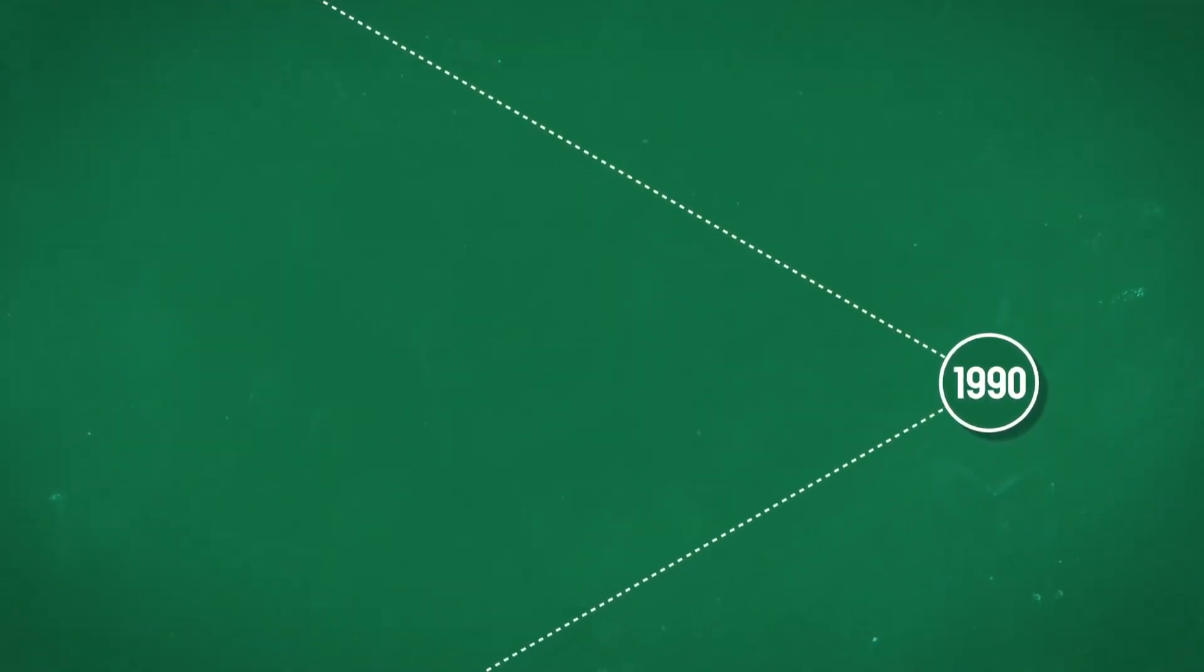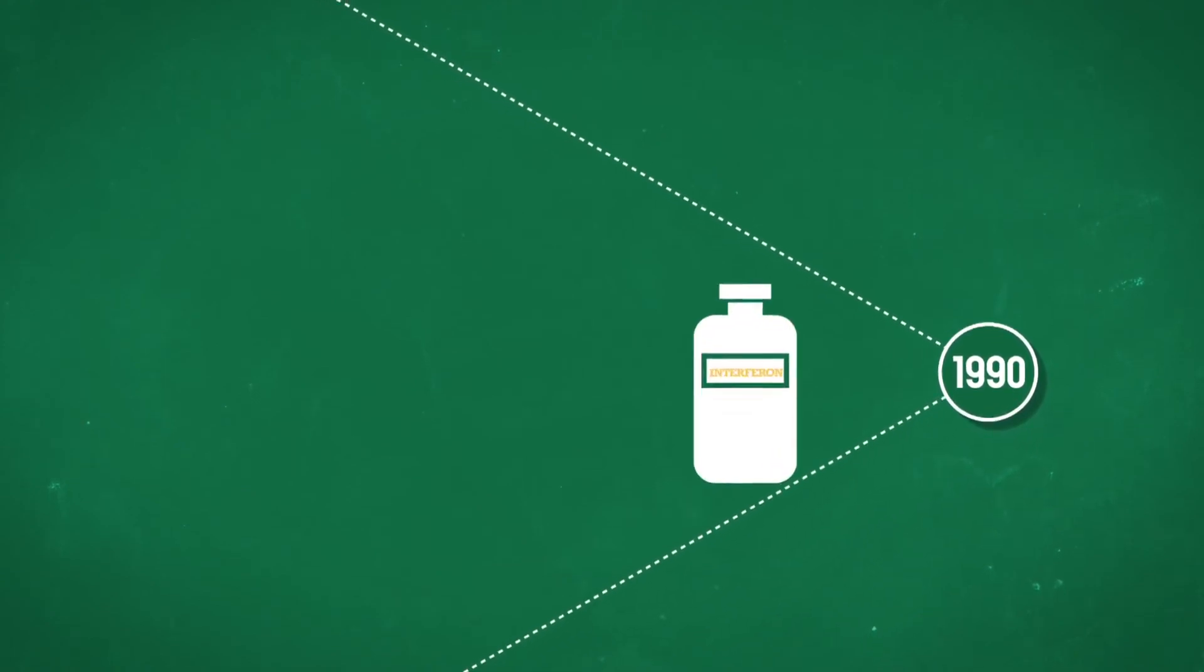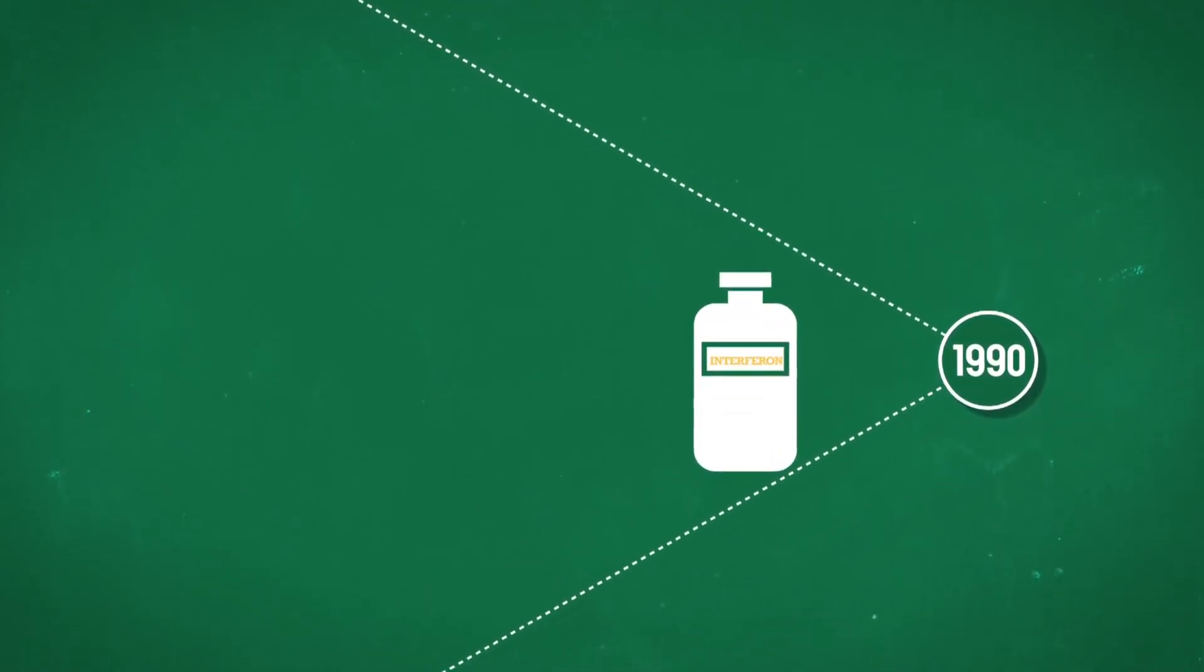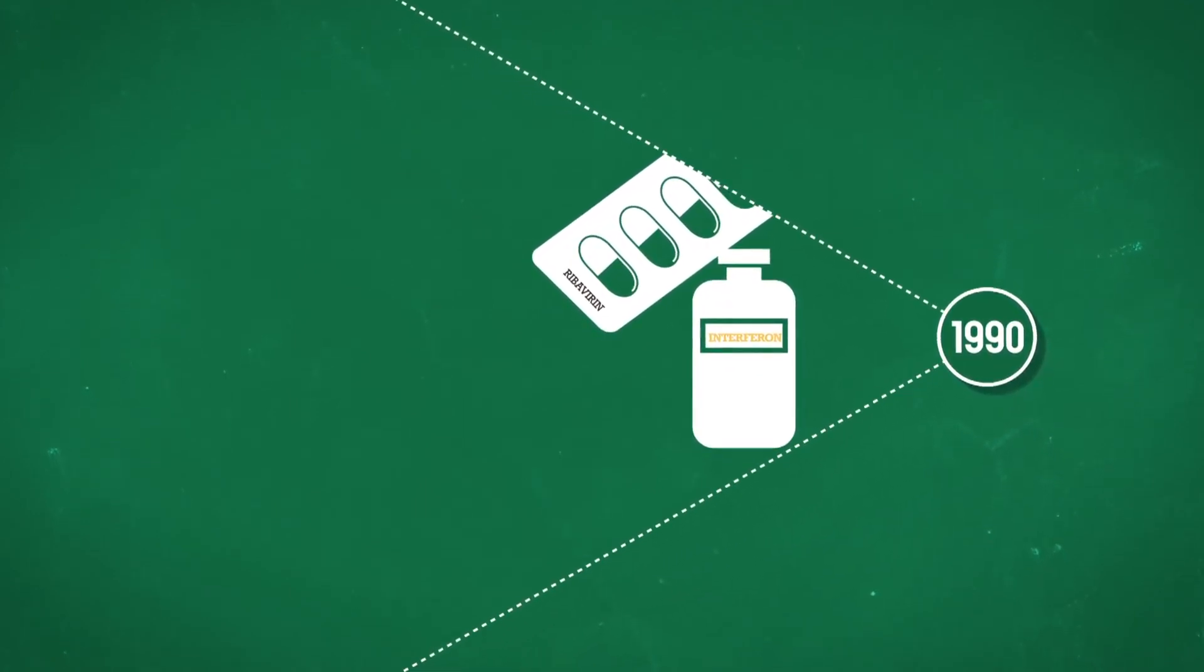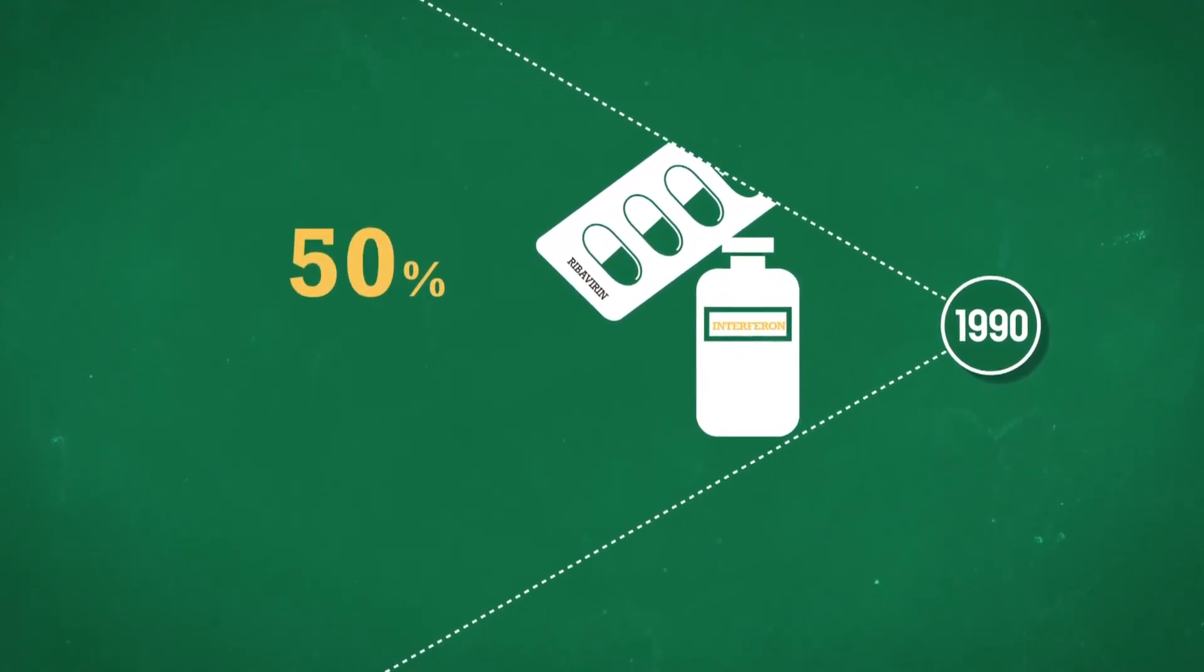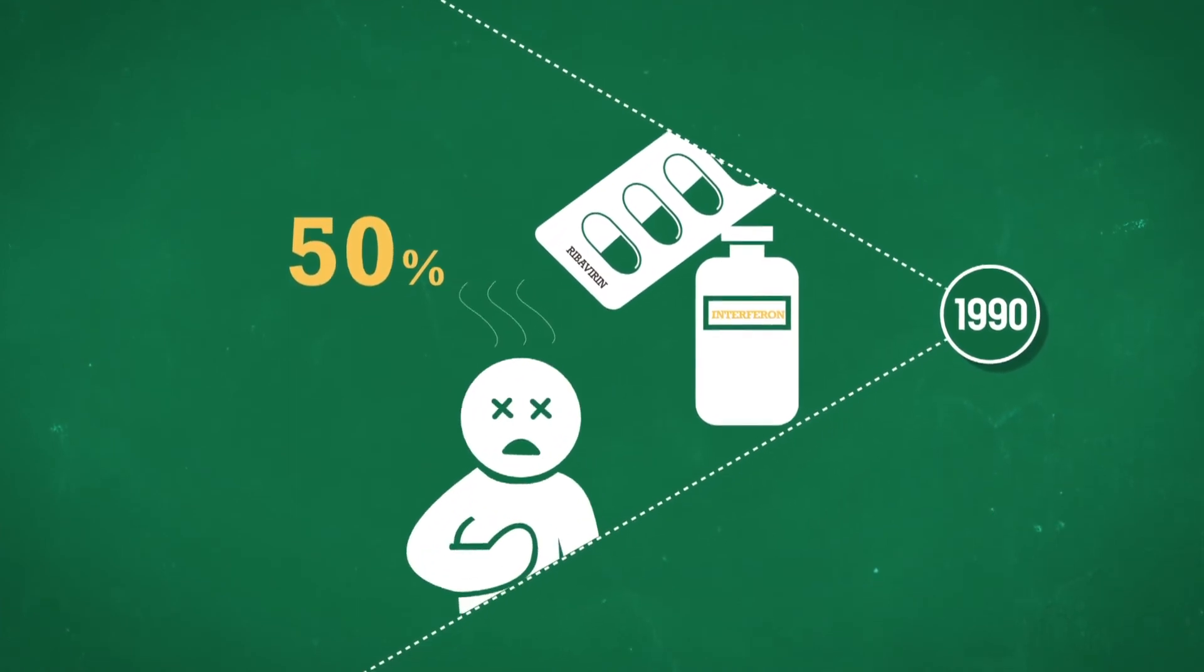Since the 1990s, hepatitis C has been treated with a combination of a protein called interferon and an antiviral, ribavirin. But the cure rate is less than 50% and side effects are common and debilitating.